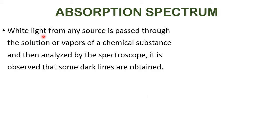White light from any source is passed through the solution or vapors of a chemical substance and then analyzed by the spectroscope, which contains a prism, slit, and photographic plate. It is observed that some dark lines are obtained.